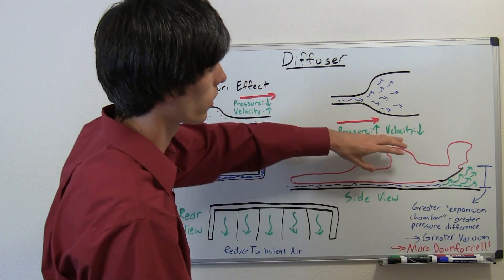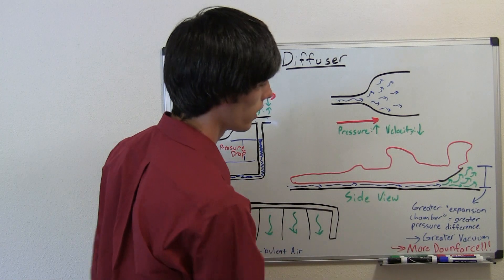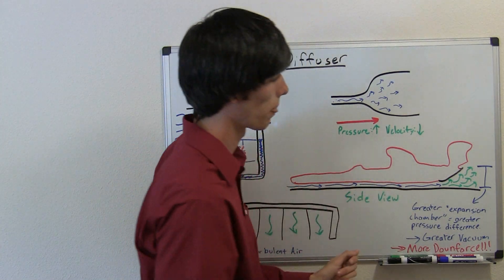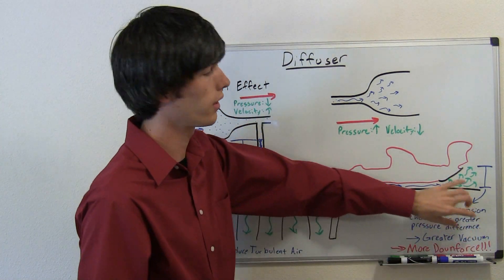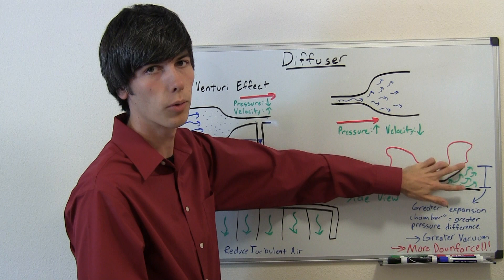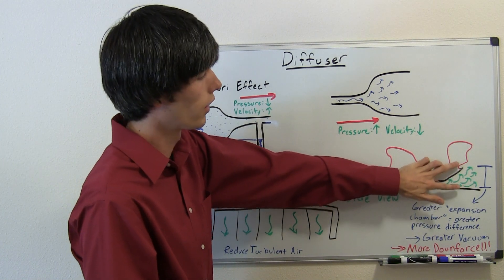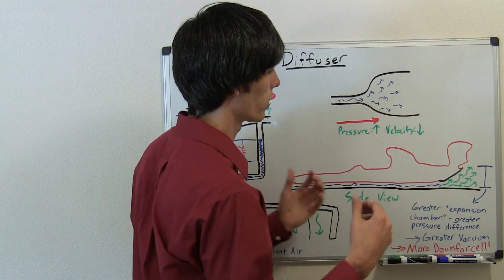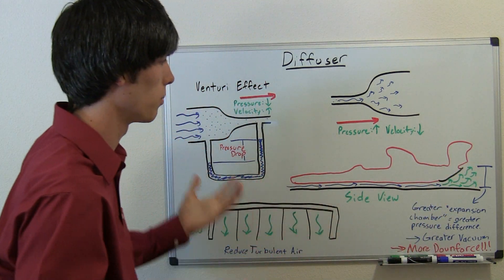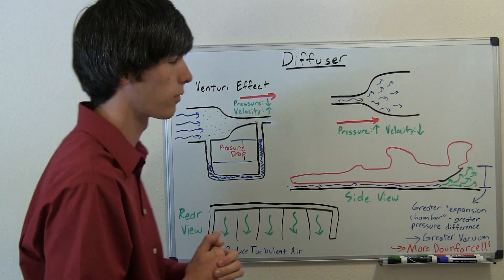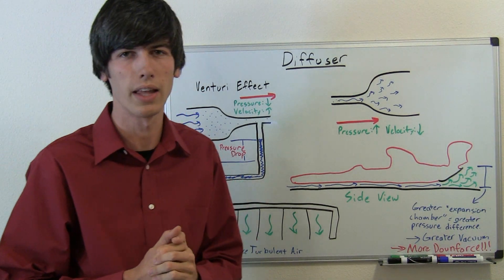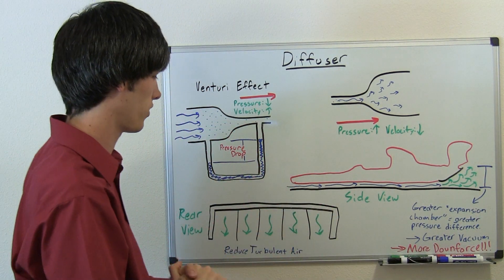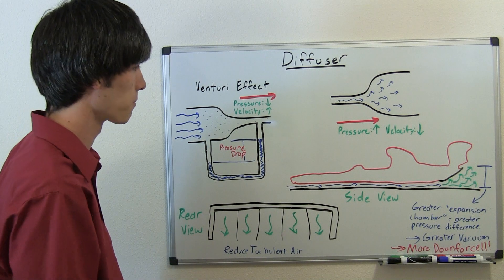If you have a greater vacuum underneath the car, you're going to have more downforce. This diffuser height is regulated in Formula One so that you can't create an obscene amount of downforce, making it a little bit safer for drivers since they won't be going around corners quite as fast as they otherwise could.